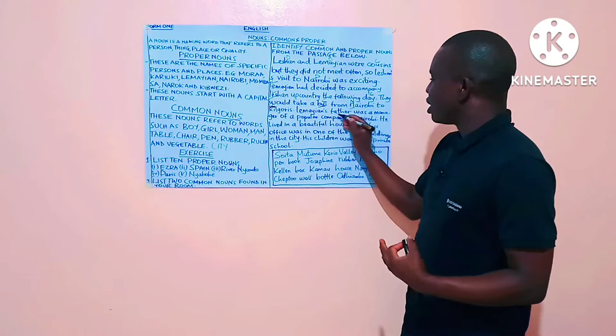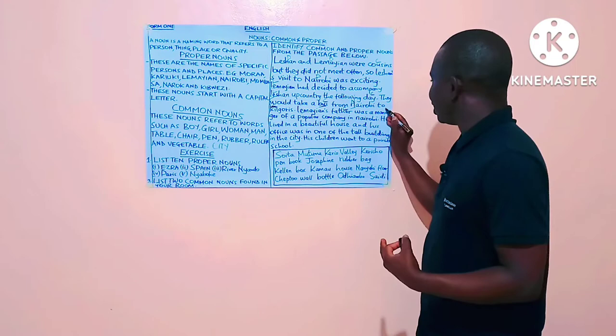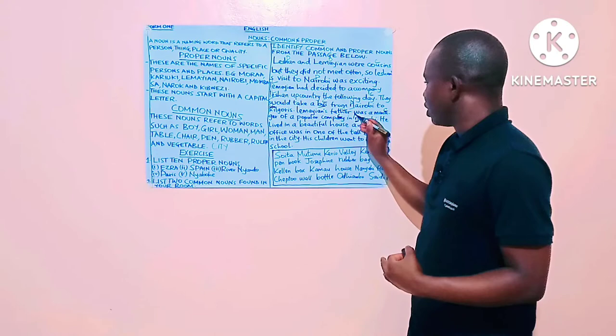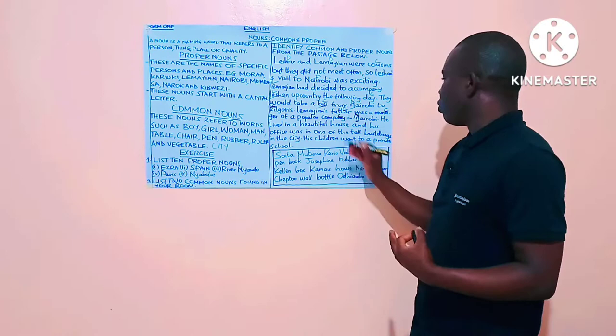Lemayan's father was a manager of a popular company in Nairobi. So, Lemayan's father, father is a common noun, was a manager. Manager will also be a common noun of a popular company. Company is also a common noun in Nairobi. Nairobi, as we have seen earlier, is a proper noun.